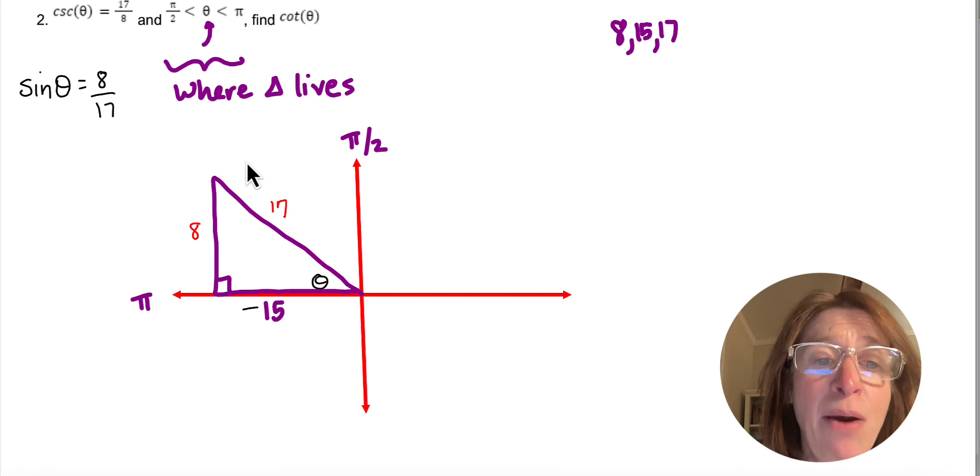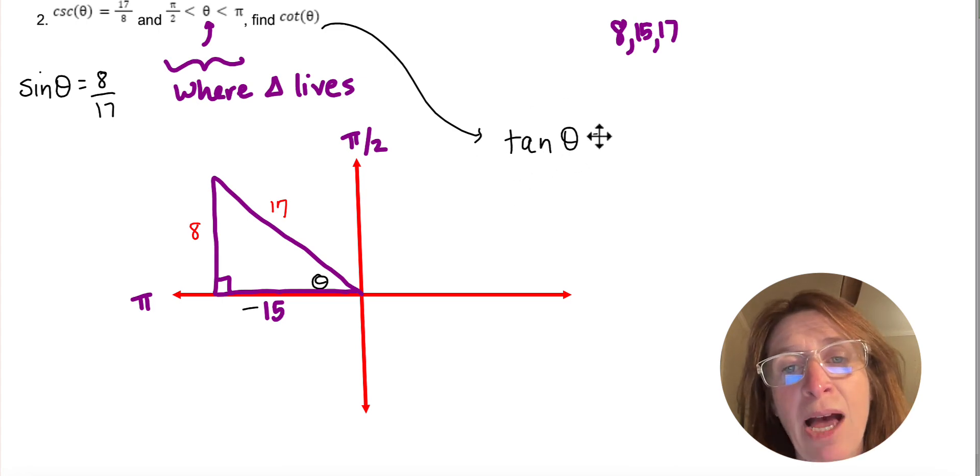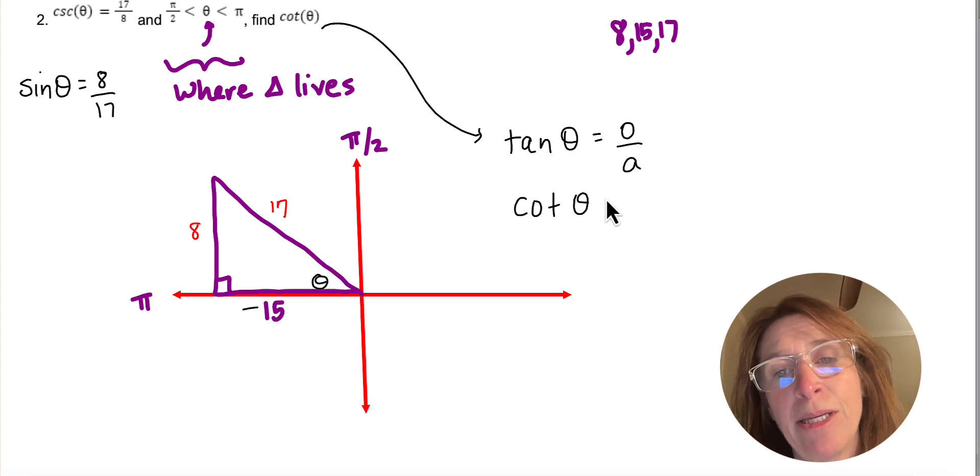So now I have everything I need to find cotangent theta. I like to do this using the reciprocal just because it's easier for me. Tangent theta we know is opposite over adjacent, so cotangent theta is going to be adjacent over opposite.